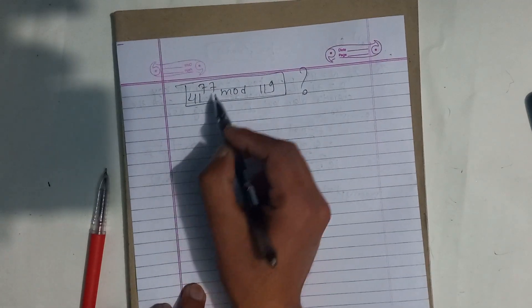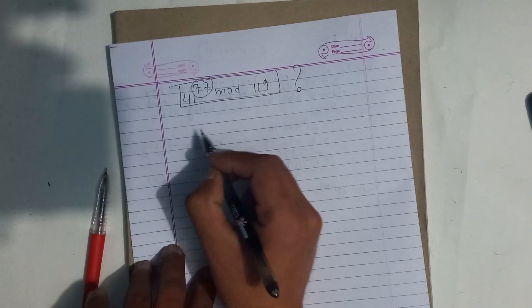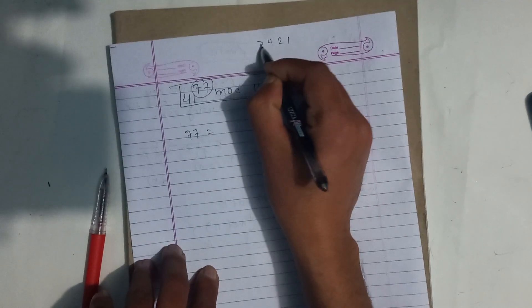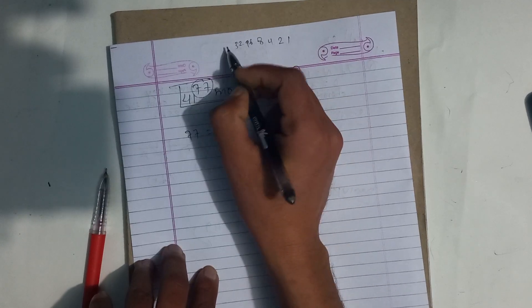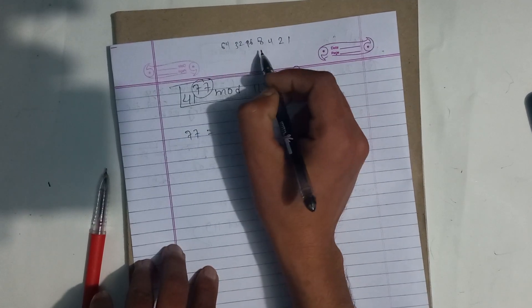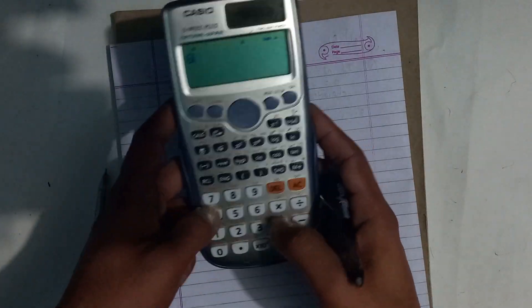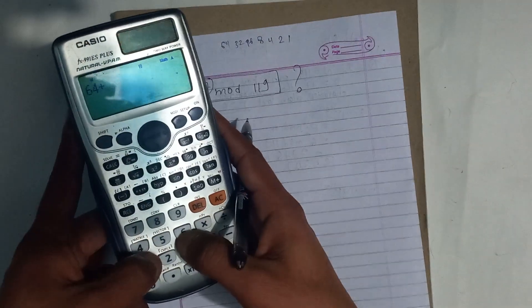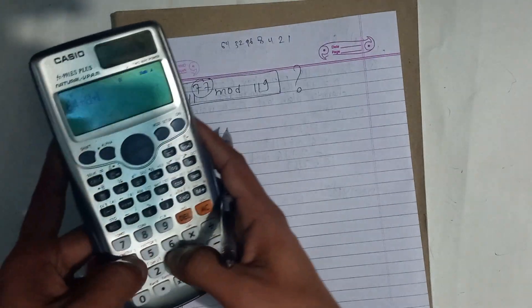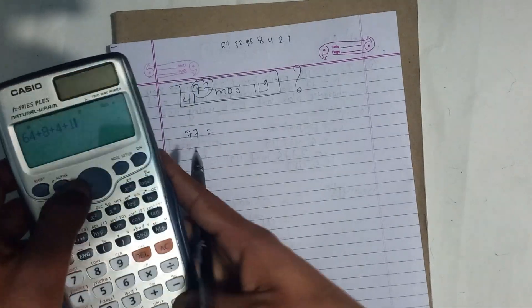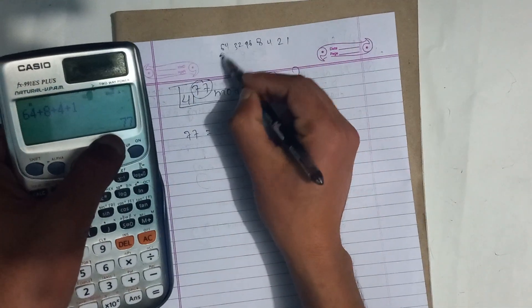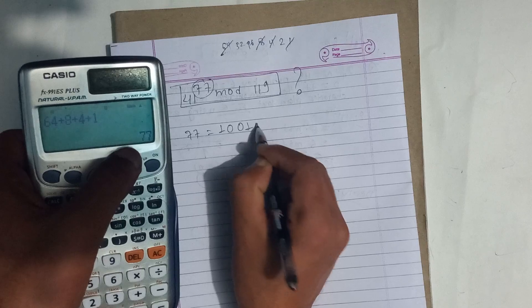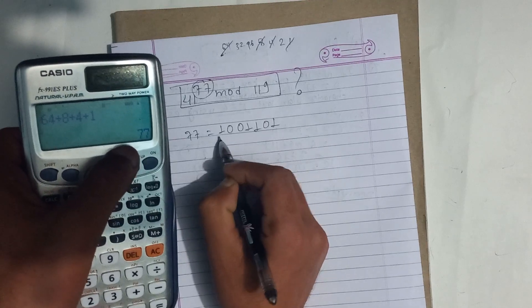What do we do? We can do the power in binary. So 1, 2, 4, 8, 16, 32, 64. We can do the number 77. We can convert the number 77 to binary. This is the number 77, so 1 0 0 1 0 1, this is our 77.